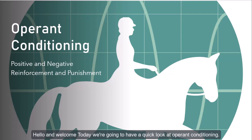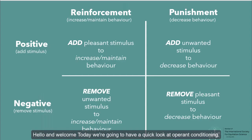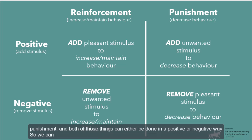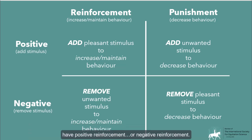Hello and welcome. Today we're going to have a quick look at operant conditioning. We divide operant conditioning into four different quadrants. We have reinforcement and punishment, and both of those things can either be done in a positive or negative way. So we can have positive reinforcement, negative reinforcement, positive punishment, or negative punishment.